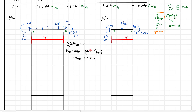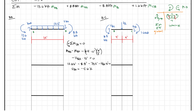Plugging in, we get 13.6 kip-feet minus 8.8 kip-feet minus 72 kip-feet minus VBA times 12 feet equals zero. Solving for VBA gives minus 5.6 kips. So on our shear diagram, we can plot this directly at minus 5.6 kips.